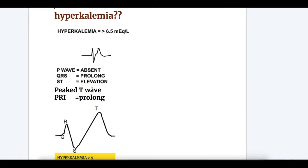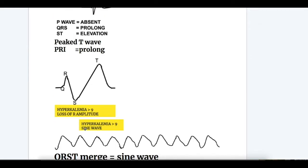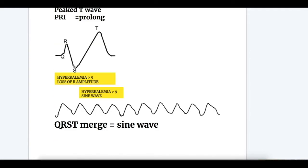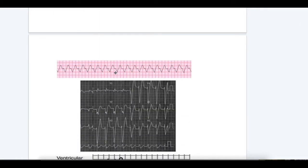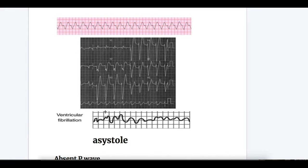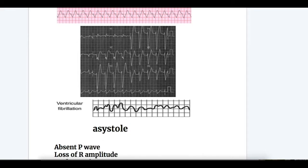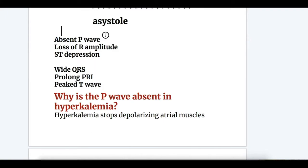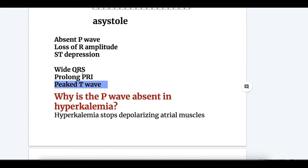When potassium level exceeds 9 mEq/L, there is loss of R wave amplitude. Then a sine wave appears — QRST merging together forms the sine wave. Above 9 mEq/L, it causes ventricular tachycardia, then becomes irregular, progressing to ventricular fibrillation and asystole. In summary, hyperkalemia causes absent P wave, loss of R amplitude, ST depression, peaked T waves, wide QRS, and prolonged PR interval.